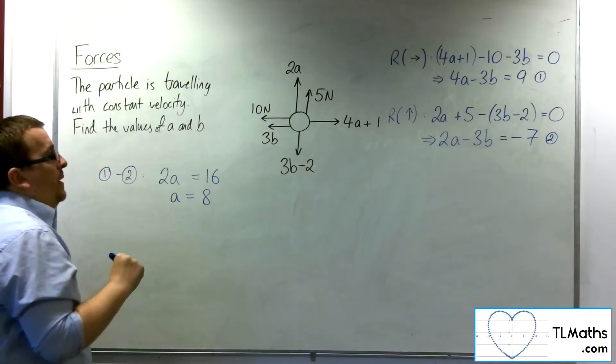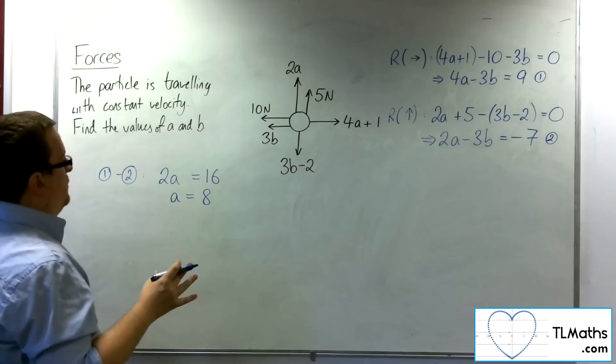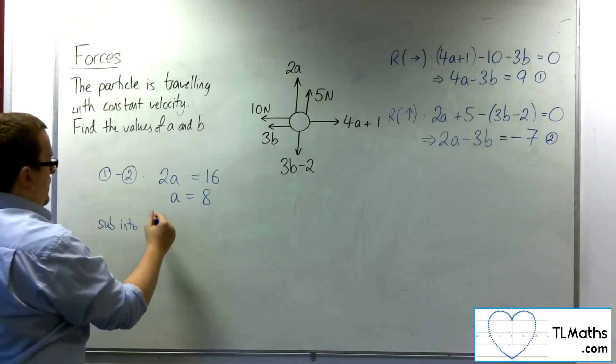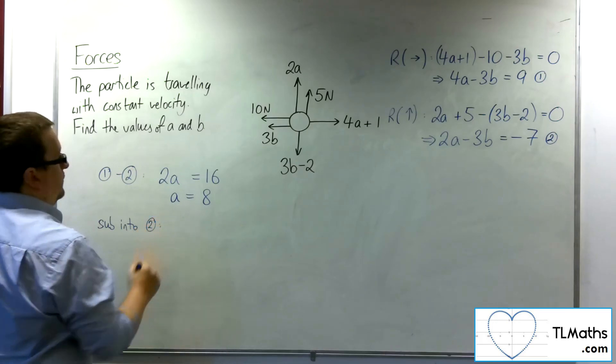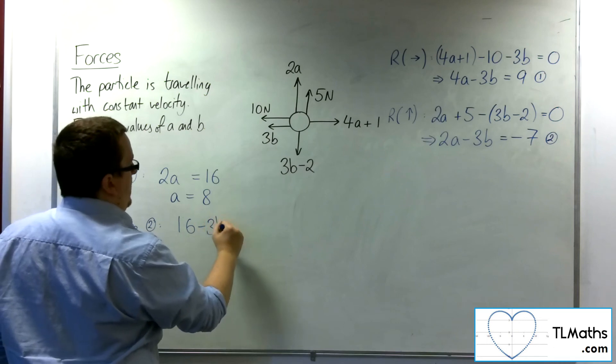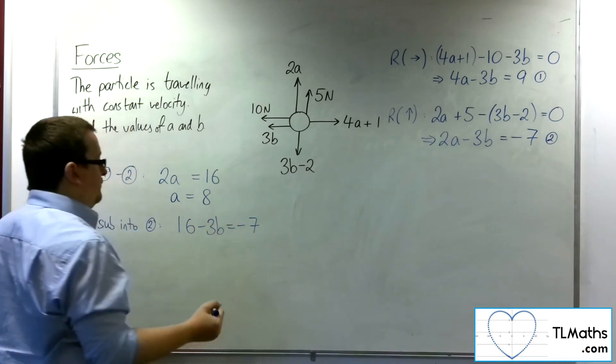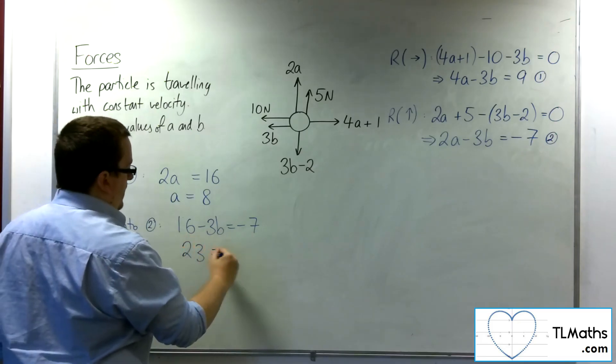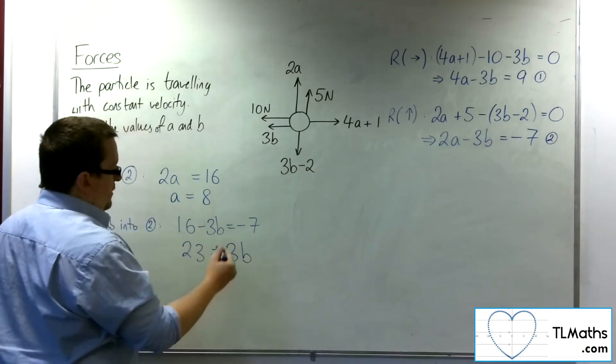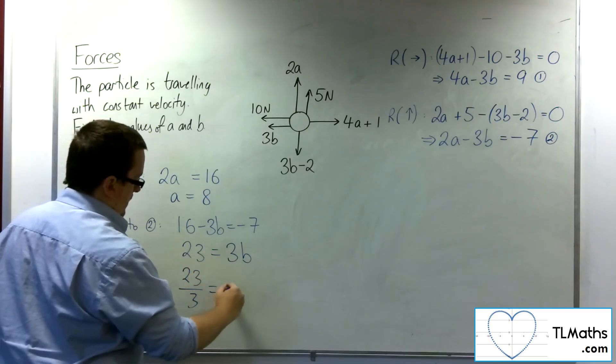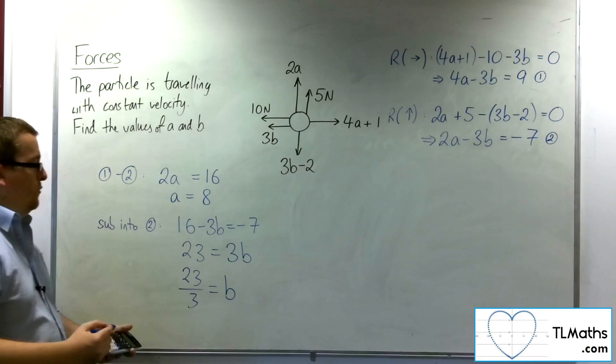Now I can find B. So I can substitute into either of those two. So I'm going to sub into number 2. So 2 lots of A is 16. Take away 3B is minus 7. So if I add the 7 to both sides, I get 23. Add the 3B to both sides, I get 3B. Divide both sides by 3. And so B must be 23 thirds.